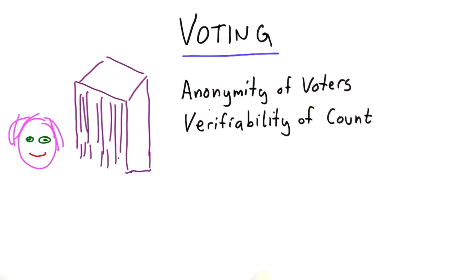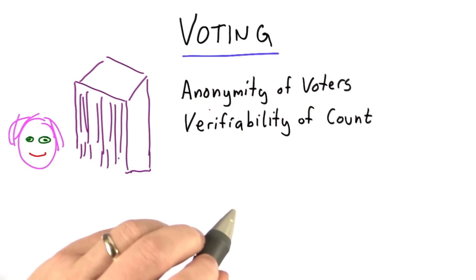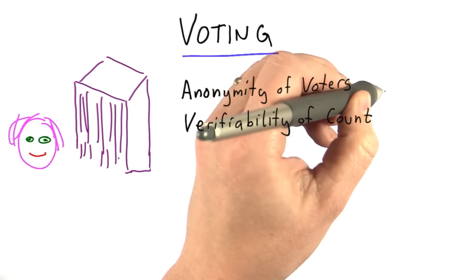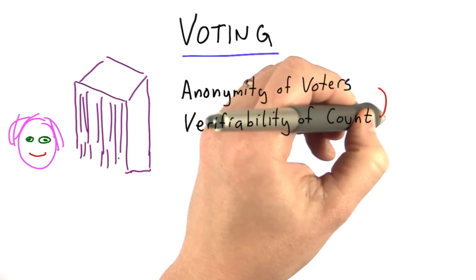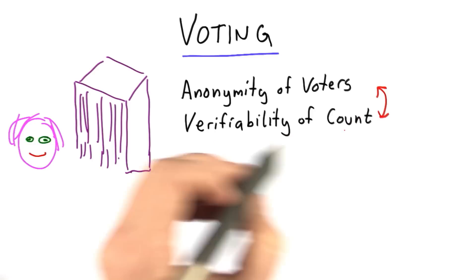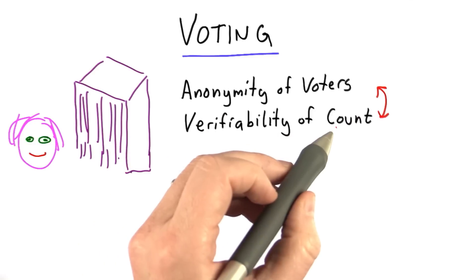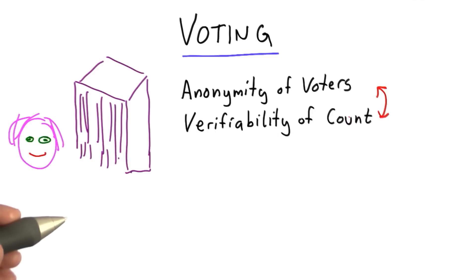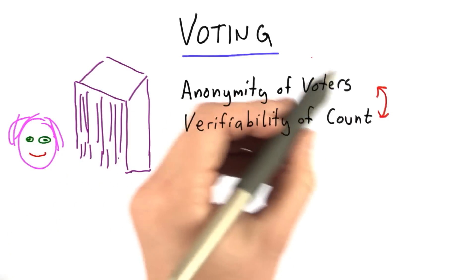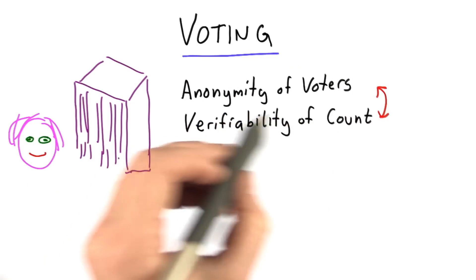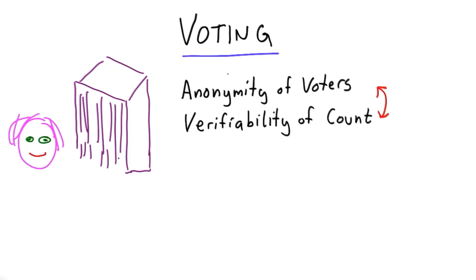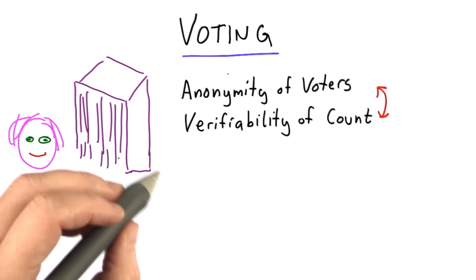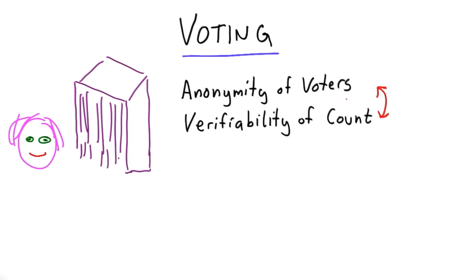The other property a voting system should have is that the count is verifiable. These are sort of in opposition. Verifying the count would be easy if each voter would be willing to publicly declare their vote and someone could look at all of those votes. But if we want to keep the votes anonymous and have a notion of a private ballot, well then verifying the count becomes more challenging.